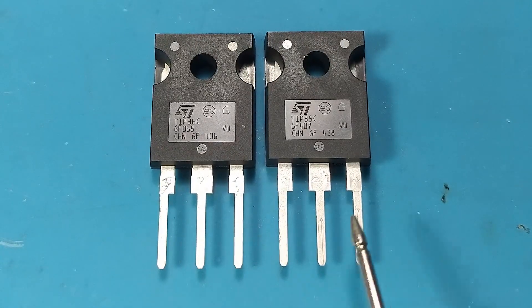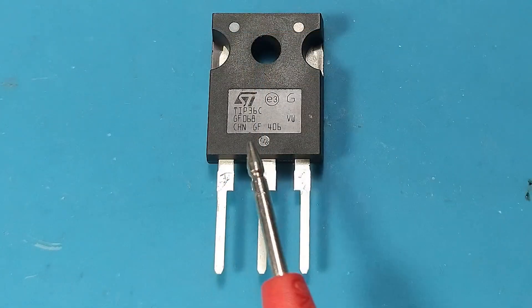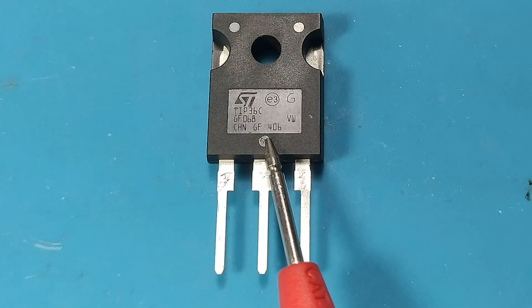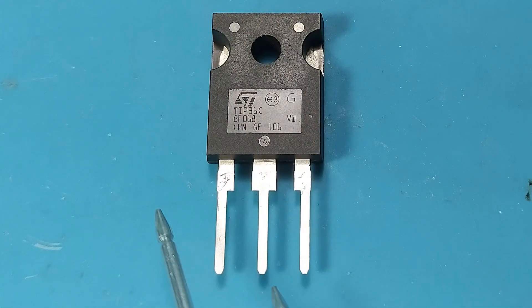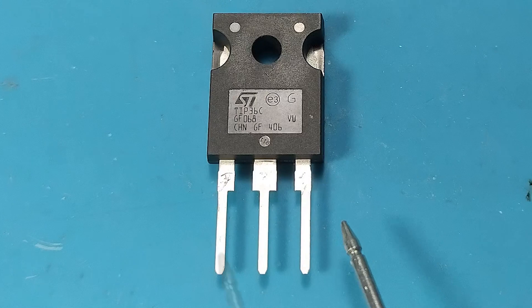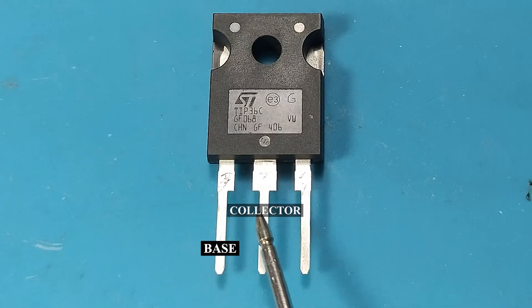The pin configuration of these transistors is as follows. Looking at the transistor with the marked area facing us and the terminals facing down, from left to right we have base, collector, and emitter.